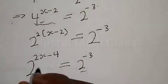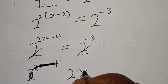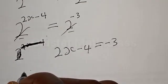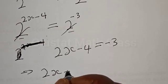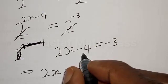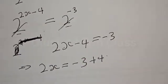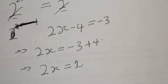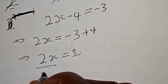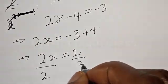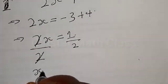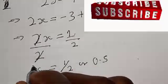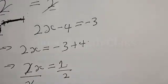We have the same base, so we are left with 2x minus 4 is equal to minus 3. Collecting like terms: 2x is equal to minus 3 plus 4, which is 1. Dividing both sides by 2, s is equal to 1 over 2, or 0.5. That is our answer.